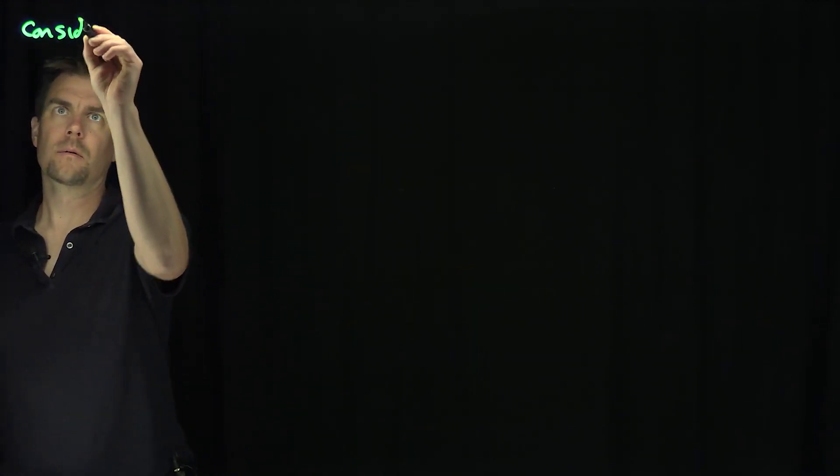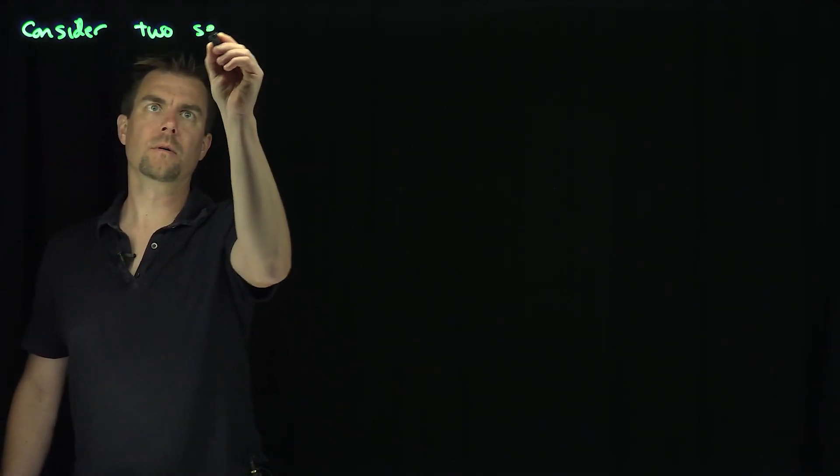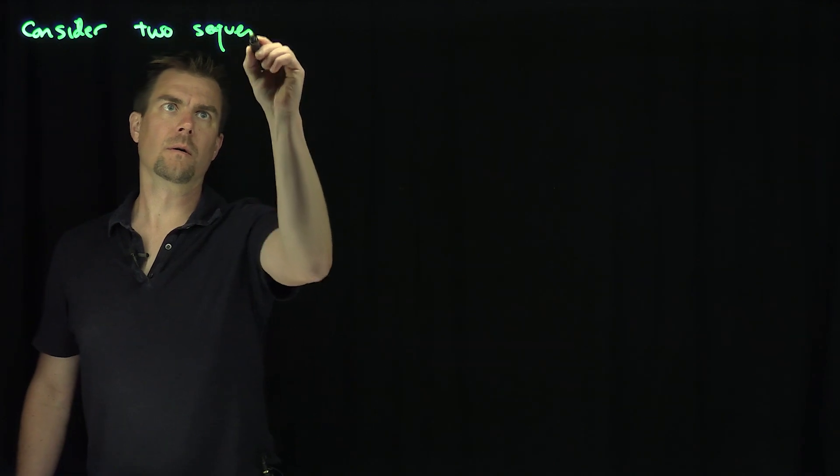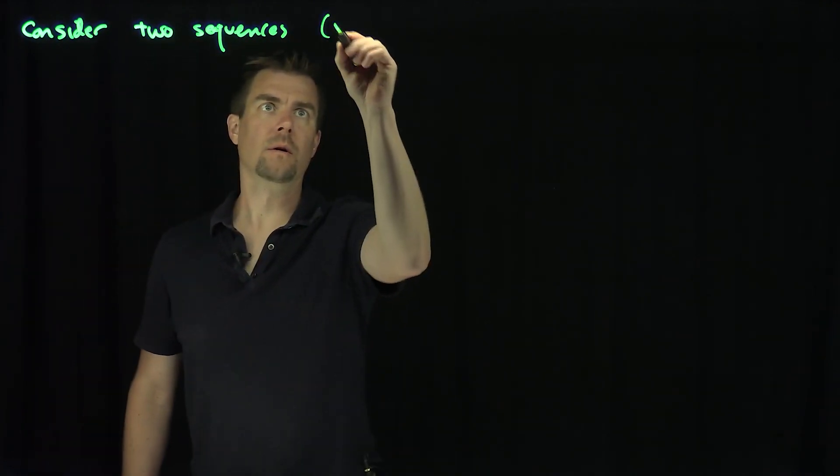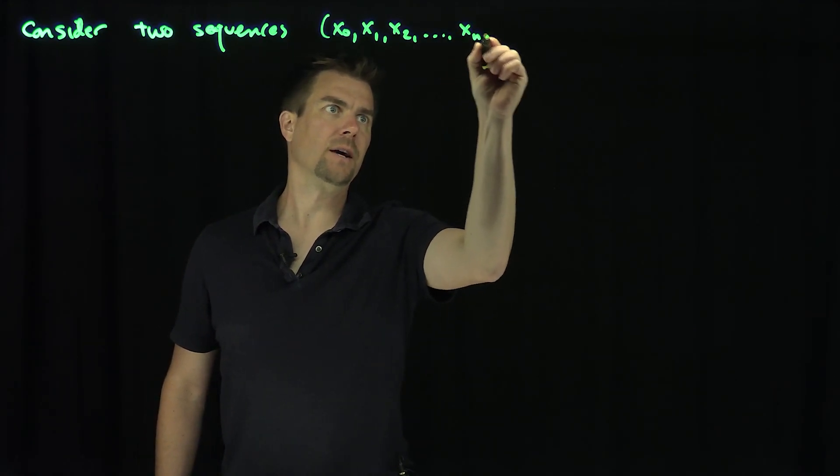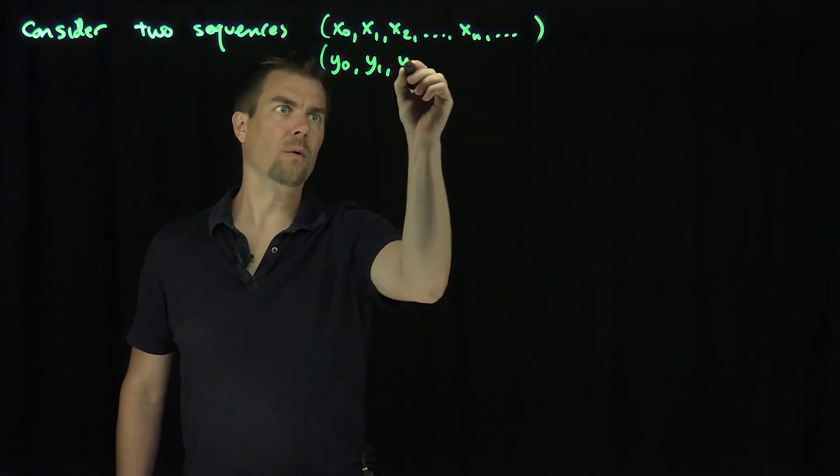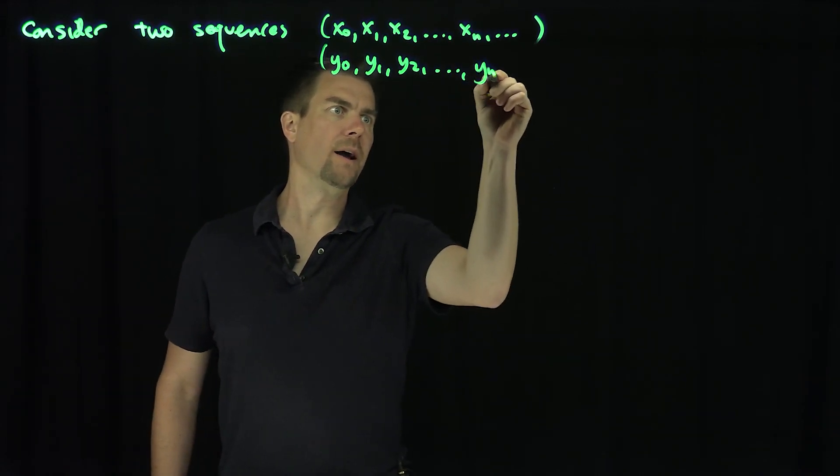Let's consider two sequences, x0, x1, x2, xn, like so, and y0, y1, y2, yn.